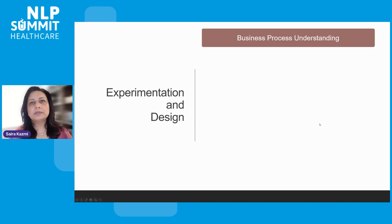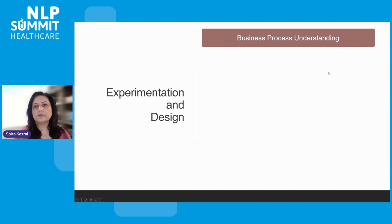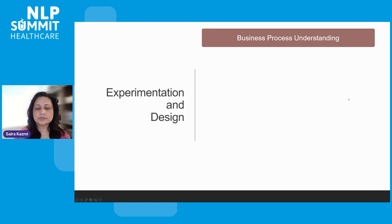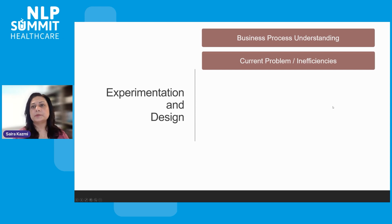Going a bit deeper on experimentation and design — the first step is for all team members to understand the business process very well: what is the problem you're trying to solve, how complex is it, how does it impact the users who are going to use the system, and is there training and change management that needs to be put in place? Really articulate the inefficiencies and problems, and which problems are going to be addressed by your solution and which will still remain.